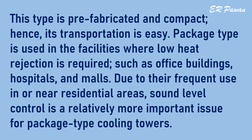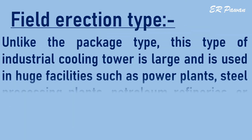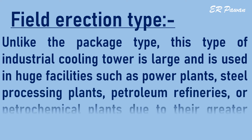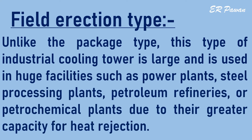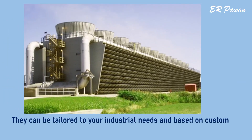Due to their frequent use in or near residential areas, sound level control is a relatively more important issue for package type cooling towers. Field-erected type: unlike the package type, this type of industrial cooling tower is large and is used in huge facilities such as power plants, steel processing plants, petroleum refineries, or petrochemical plants. Due to their greater capacity for heat rejection, they can be tailored to industrial needs based on custom specifications.